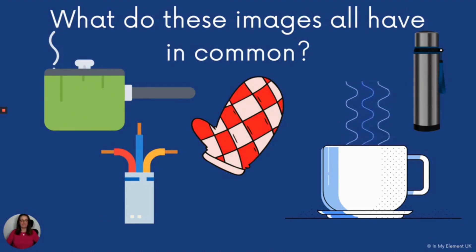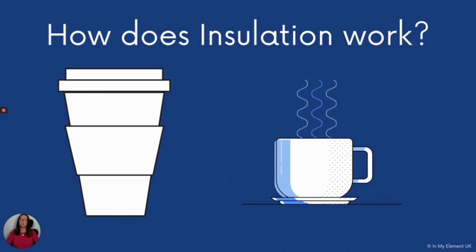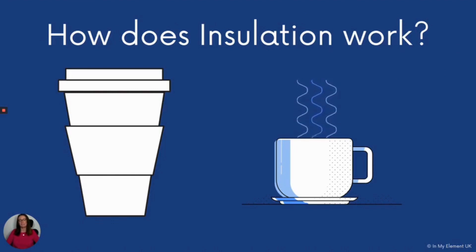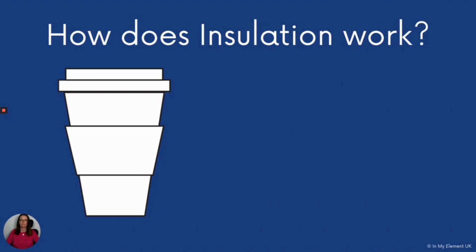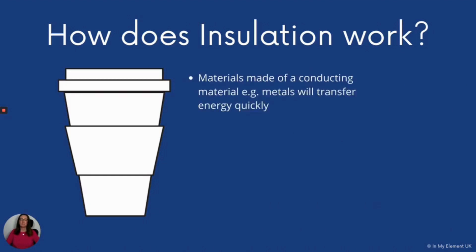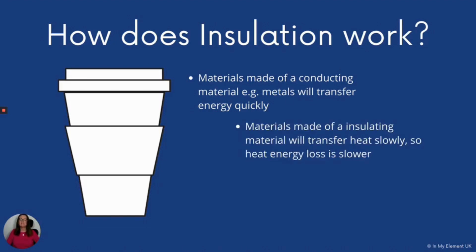Now we need to understand how insulation works. We've got two different types of coffee cup here, specifically looking at the takeaway coffee cup — whether for coffee, tea, or hot chocolate, the principle is the same. Materials made of a conducting material like a metal saucepan transfer heat energy quickly. Materials made of an insulating material such as cardboard transfer heat slower, so heat energy loss is slower. That means the object retains the heat for longer, and an insulator will help keep that hot chocolate hot.